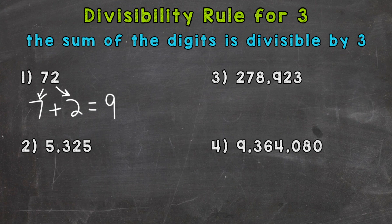So we need to see if that sum is divisible by 3. Can we do 9 divided by 3 and get an answer that doesn't have a remainder? Yes. So that means 72 is divisible by 3.